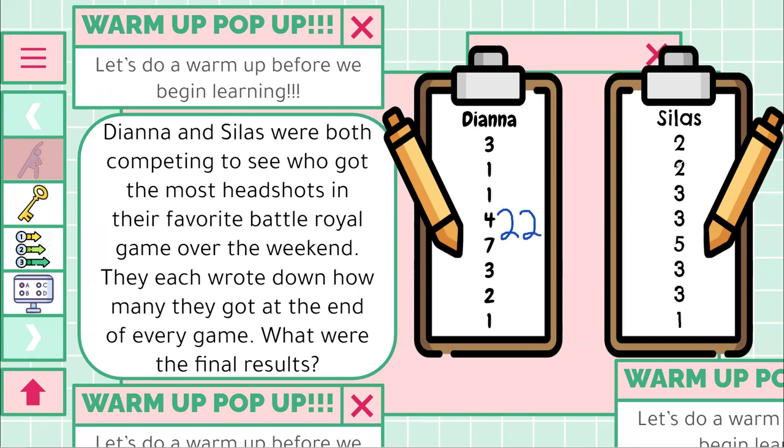With Silas, if you do 2 plus 2 plus 3 plus 3 plus 5 plus 3 plus 3 plus 1, you actually should have also gotten 22. So if in the end you determined it was a tie, they got the exact same amount, then you are absolutely correct.